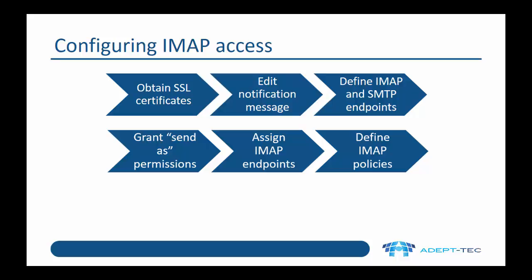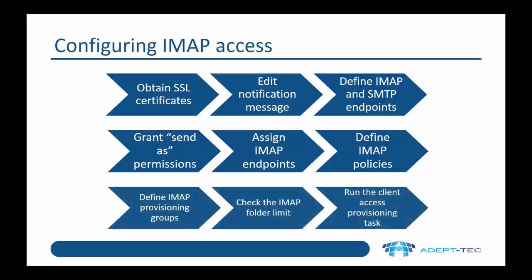You need to assign IMAP endpoints to EV servers, and then define IMAP policies. The policy defines which IMAP and SMTP endpoints are assigned. We actually assign those to individual users using the IMAP provisioning groups. The concept of an IMAP provisioning group is very similar to a provisioning group for Exchange mailbox archiving. We can assign this to users, groups, and LDAP profiles.